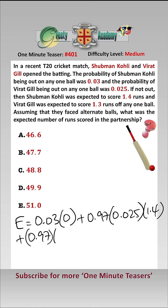0.97 times by 0.975 times by E plus 1.3 plus 1.4, which is basically neither of them are out first two balls and they have scored 2.7 expected runs. We can now solve this for E.